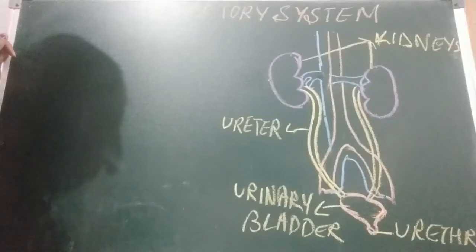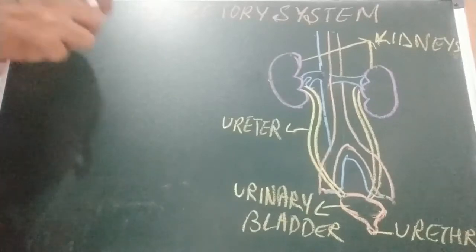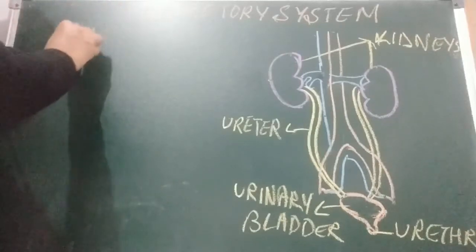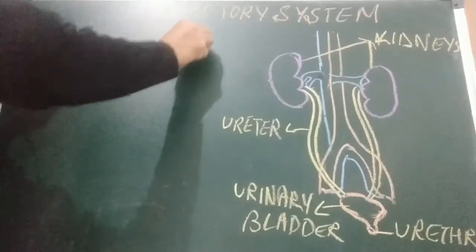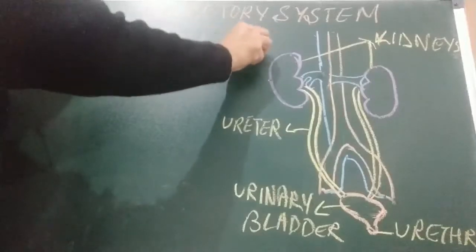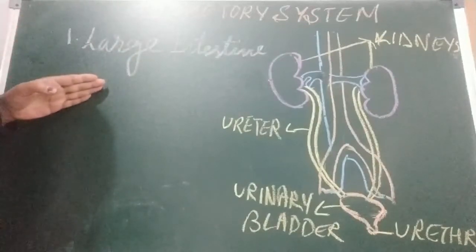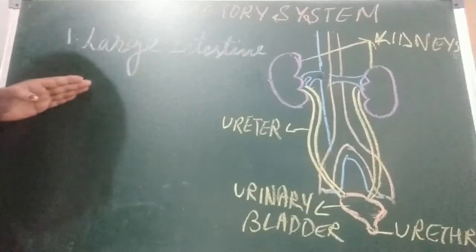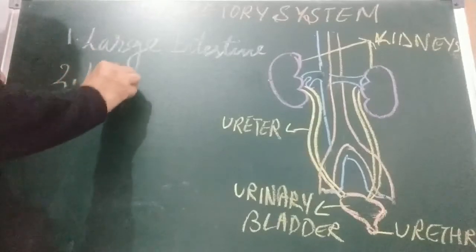We are going to talk about excretion in humans. The human body has specialized organs for the removal of various waste products formed in the body. The first organ is the large intestine. In the digestive system, the undigested food is removed from the large intestine and expelled out of the body through the anus in the form of feces.